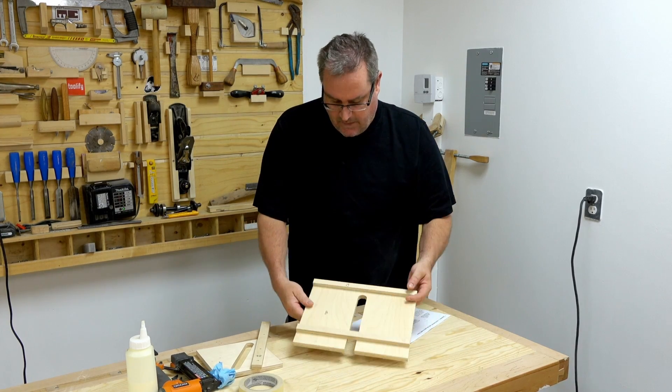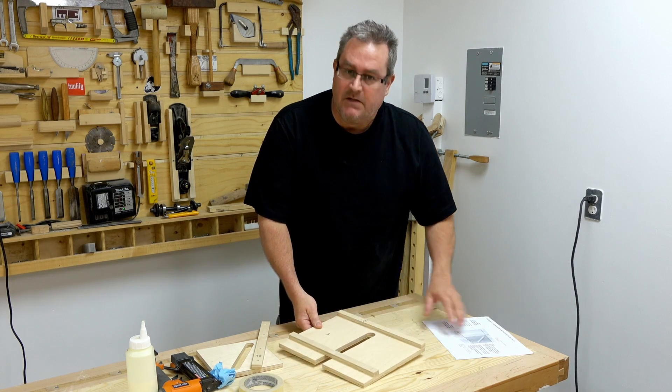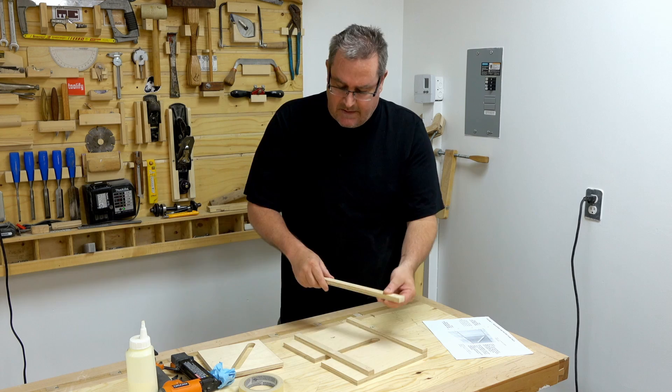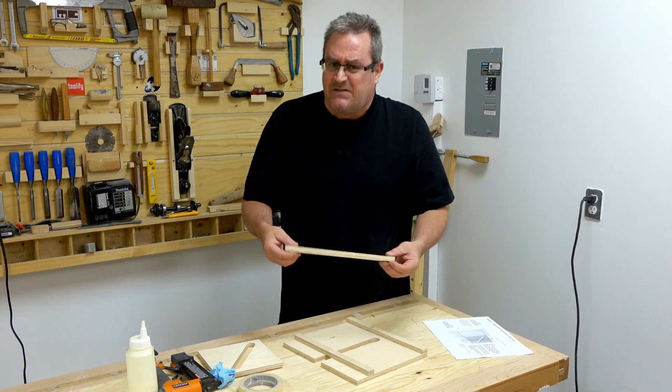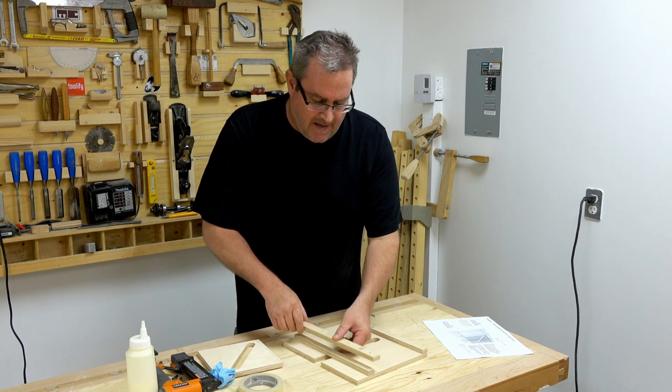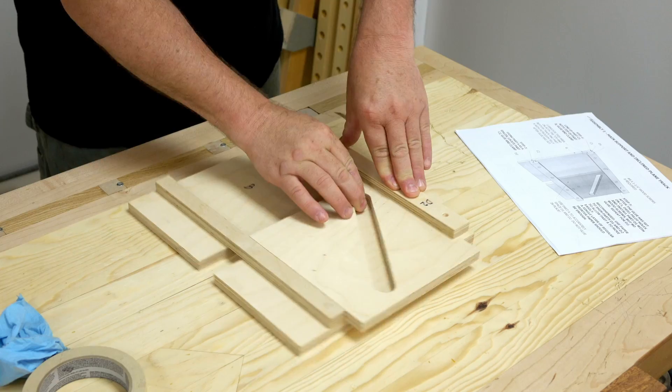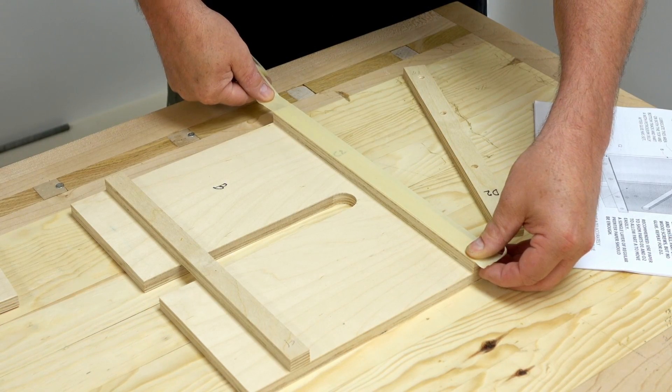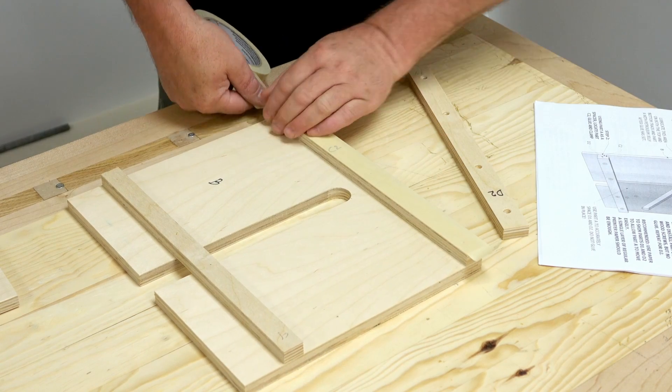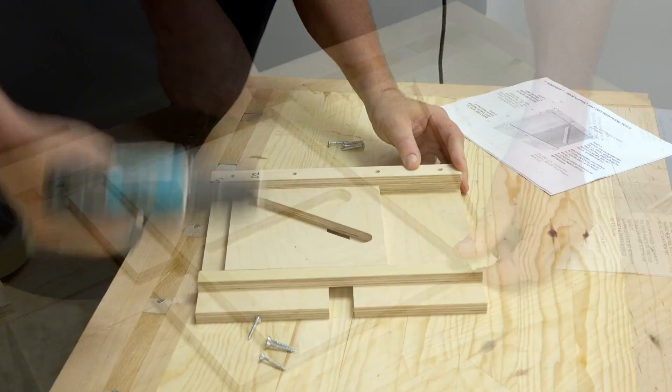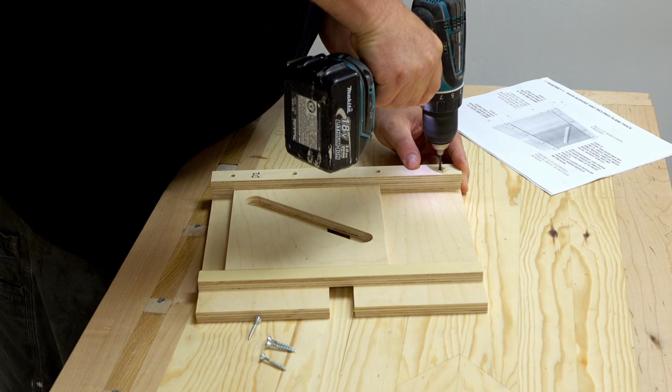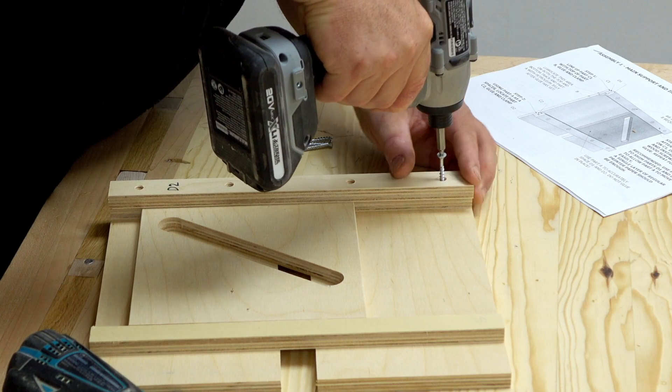Now that C1 and C2 are fastened and the glue is set up enough to proceed, I'm going to attach D1 and D2. These don't get glued in place and they have to be shimmed up. If they're too tight, part A won't slide easily and the lift could get jammed up. To shim the parts I'm just going to use a strip of masking tape. I'll stick it down to C1 and C2, and then I'll drive the screws through that to hold the parts in place.